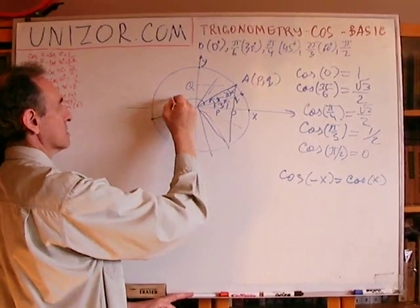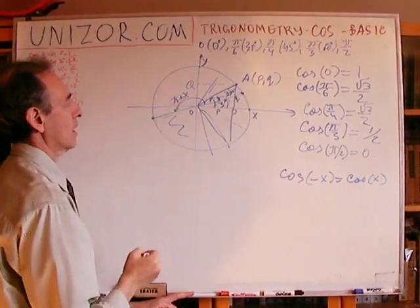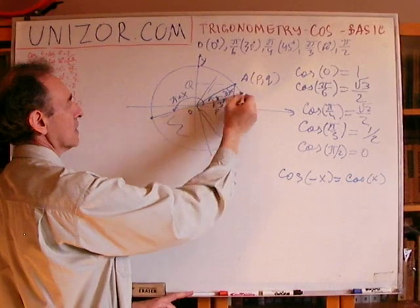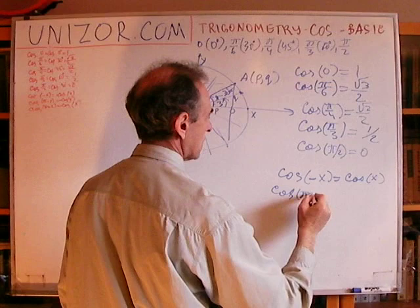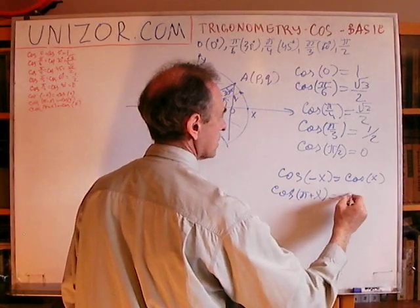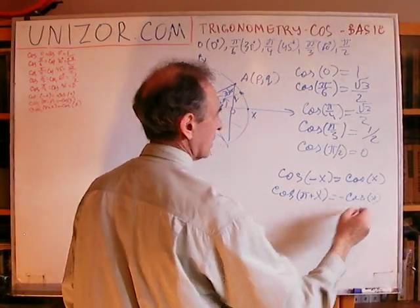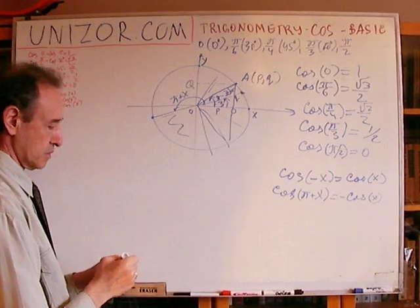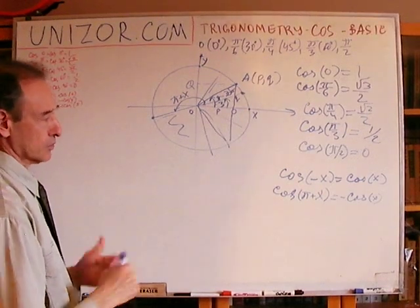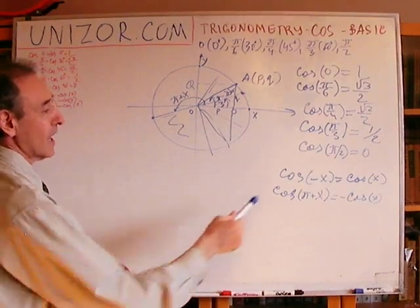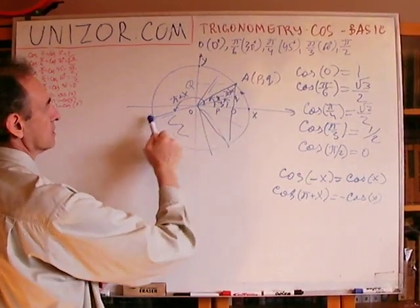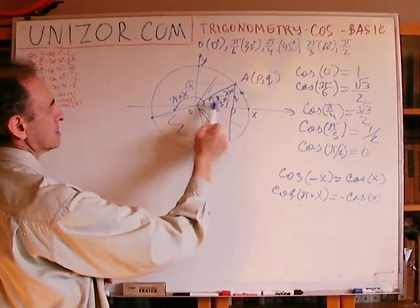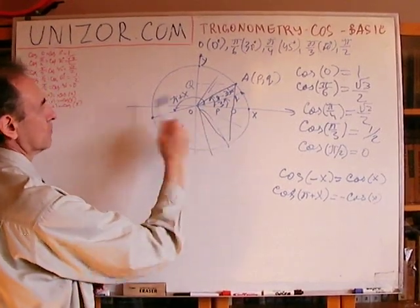So, we know how to calculate this, and to calculate cosine of π plus x, we know this is equal to minus cosine of x. That's another property which we discussed when we were talking about cosines. It's kind of obvious, because since these are centrally symmetrical points, this abscissa is positive, and this is negative by the same amount.